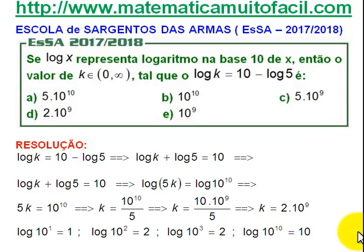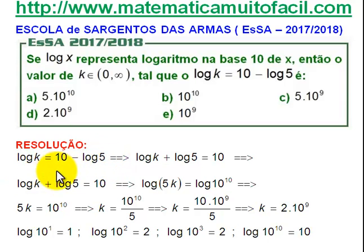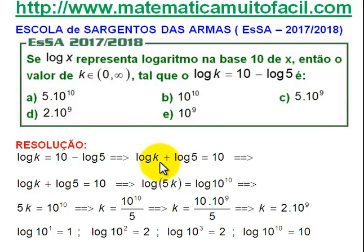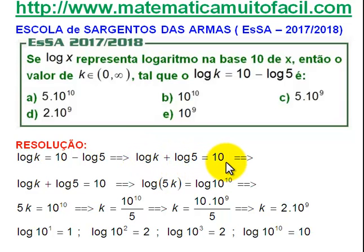Já montei aqui. O log de K é igual a 10 menos o log de 5. Esse negócio de ficar logaritmo de um lado e logaritmo de outro — vamos juntar tudo para a gente poder começar a entender a questão. Eu vou trazer esse menos o log de 5 para o primeiro membro, ficando então log na base 10 — base decimal. Log decimal de K mais log decimal de 5 é igual a 10.